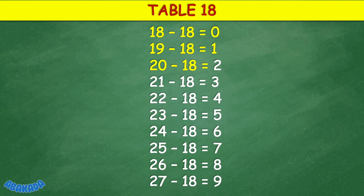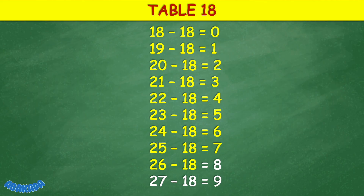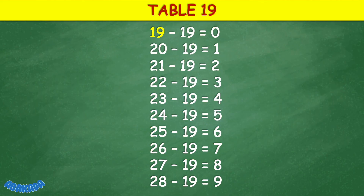Table 18 continued: 21 minus 18 equals 3, 22 minus 18 equals 4, 23 minus 18 equals 5, 24 minus 18 equals 6, 25 minus 18 equals 7, 26 minus 18 equals 8, 27 minus 18 equals 9.